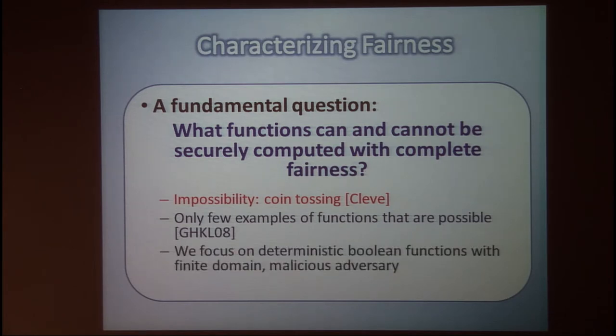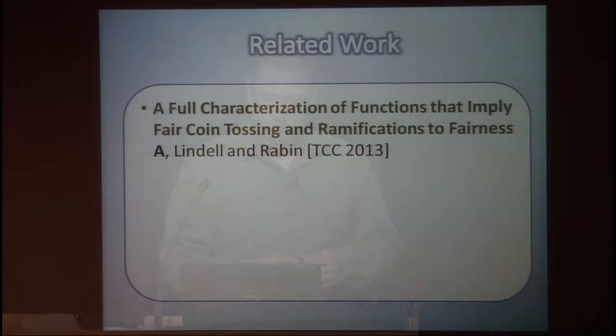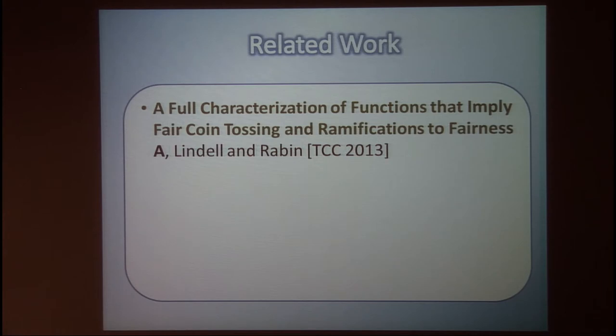The only impossibility result we have for this setting is that of Cleve, and the only possibility result is that of GHKL. I focus on deterministic Boolean functions with finite domain and malicious adversary, and we have very limited results. We want to understand when fairness is possible.